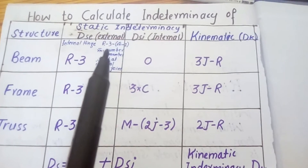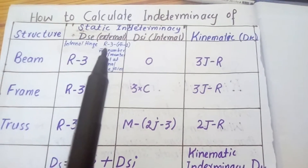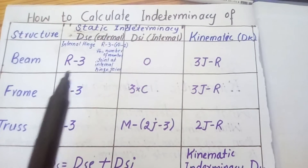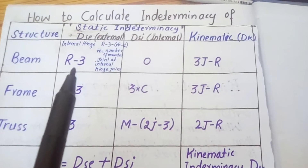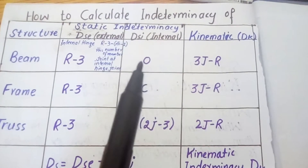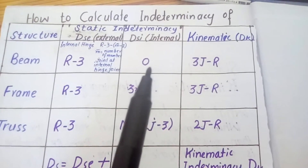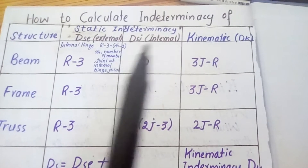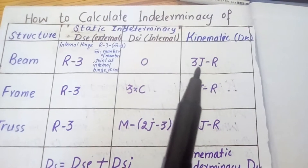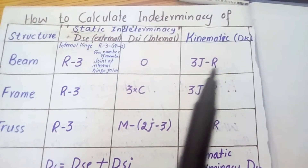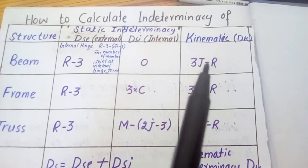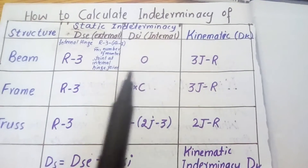We will use the formula R − 3 − (M' − 1) only if an internal hinge is given; otherwise we simply use R − 3. We should note that the internal indeterminacy for any beam is zero. The formula for kinematic indeterminacy for a beam is 3J − R, where J represents the joints and R represents the reactions.